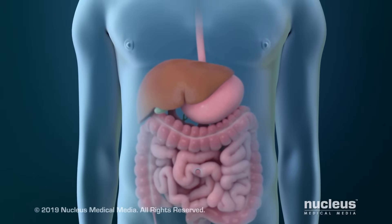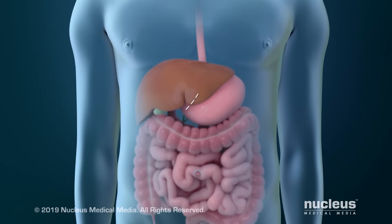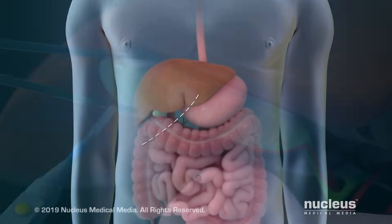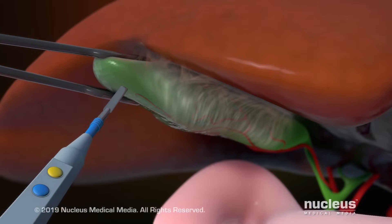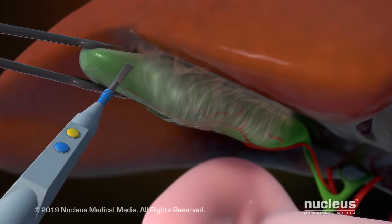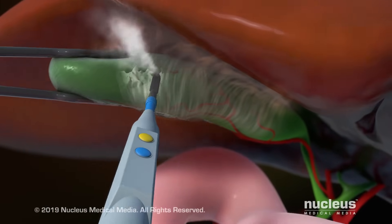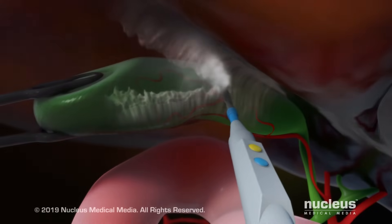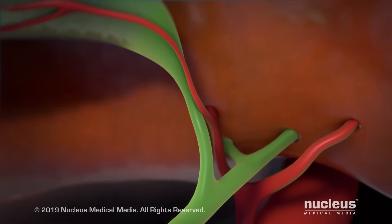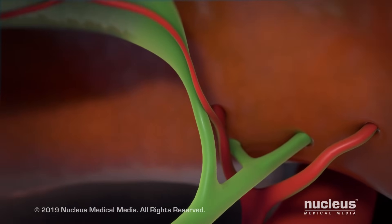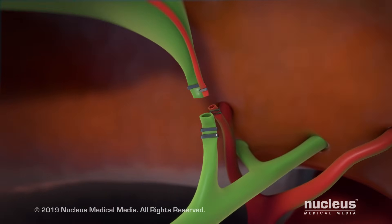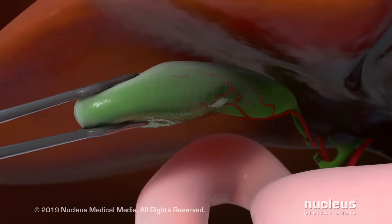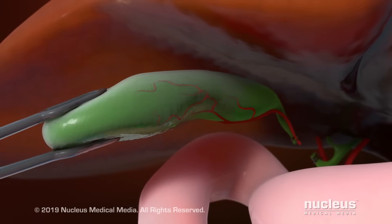In an open cholecystectomy, an incision will be made in your right upper abdomen. Once inside, your surgeon will separate your gallbladder from your liver. Then, your surgeon will clip and cut the duct and artery leading to your gallbladder and remove your gallbladder.